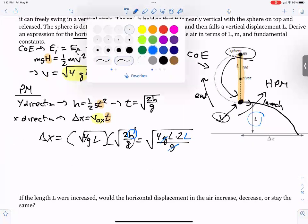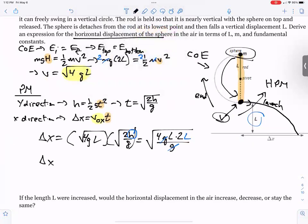So, cleaning this up just a little bit, delta X would be equal to, I can take the square root of 4 and the square root of L squared, and I get 2L, and the only thing left over is the square root of 2 there. 2L square root of 2, that would be how far it goes.